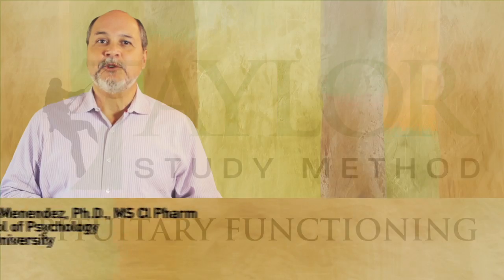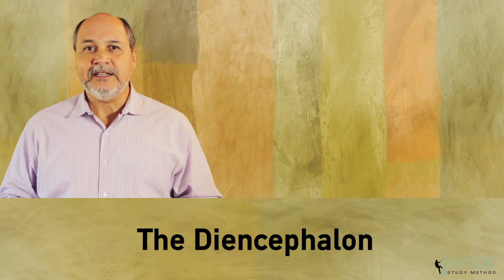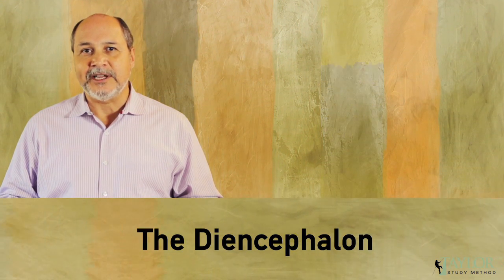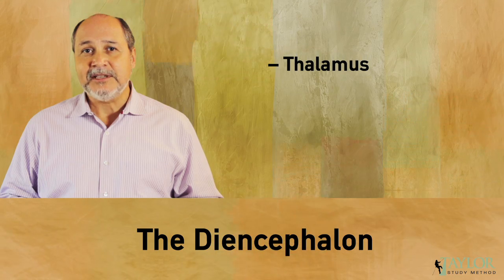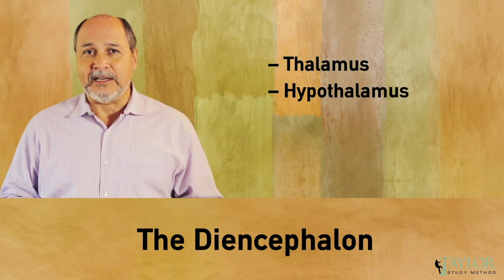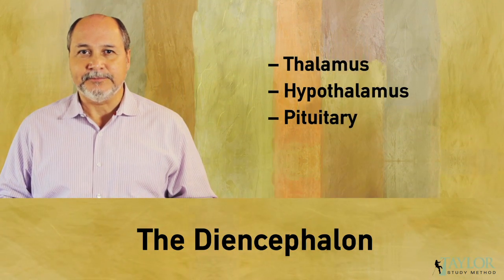In terms of subcortical structures, the diencephalon lies in the posterior forebrain and includes the following structures: the thalamus, the hypothalamus, and the pituitary.